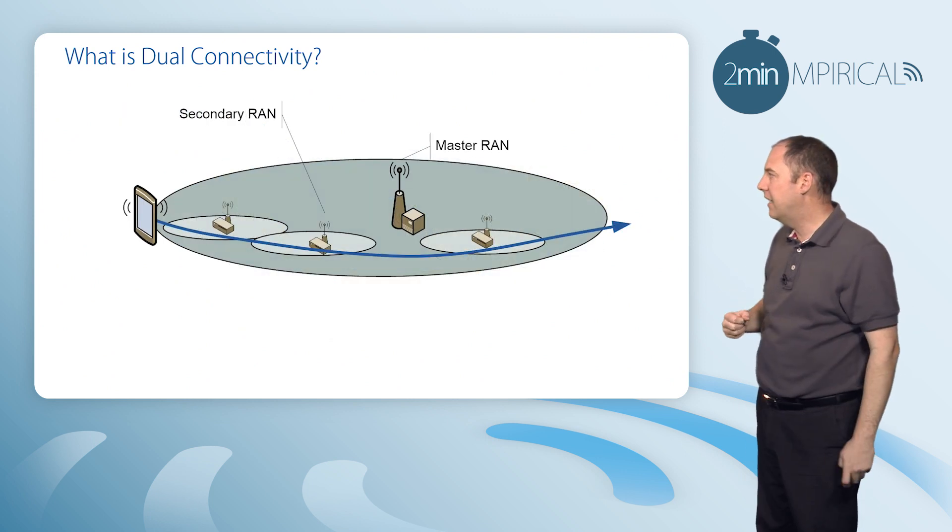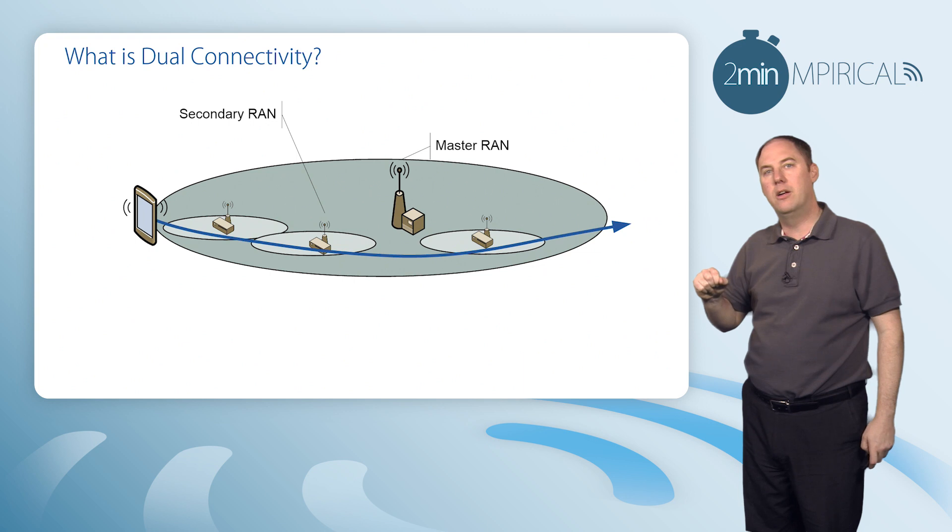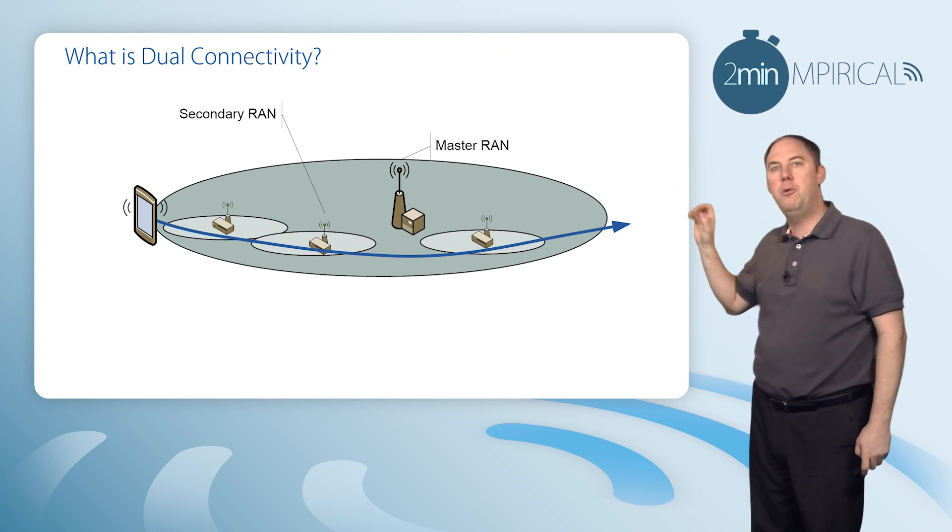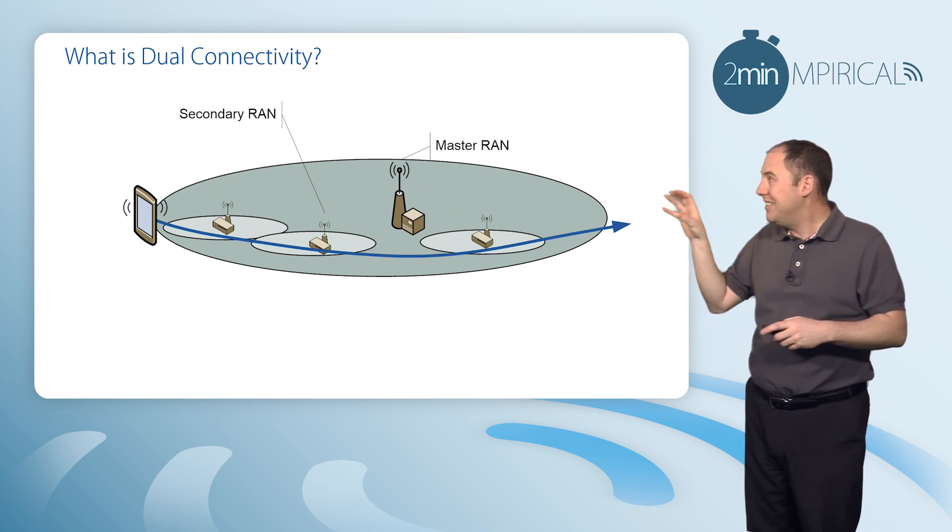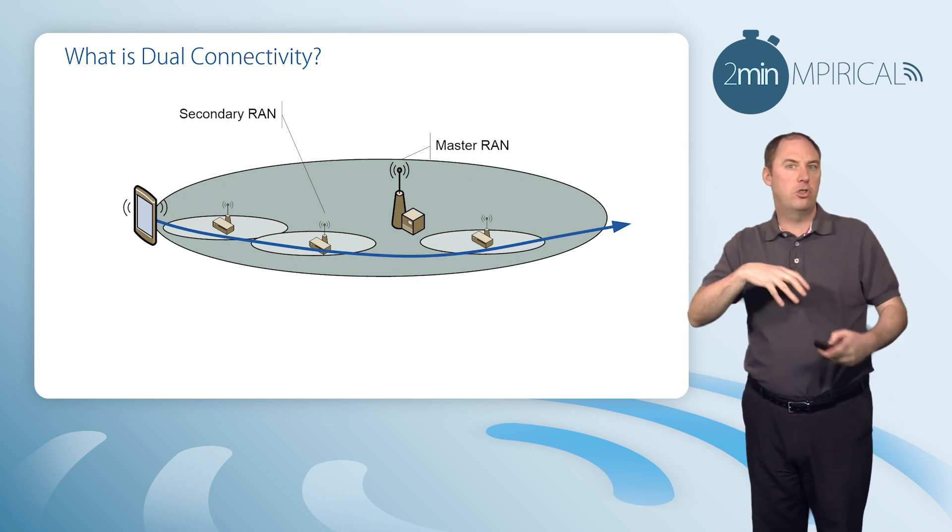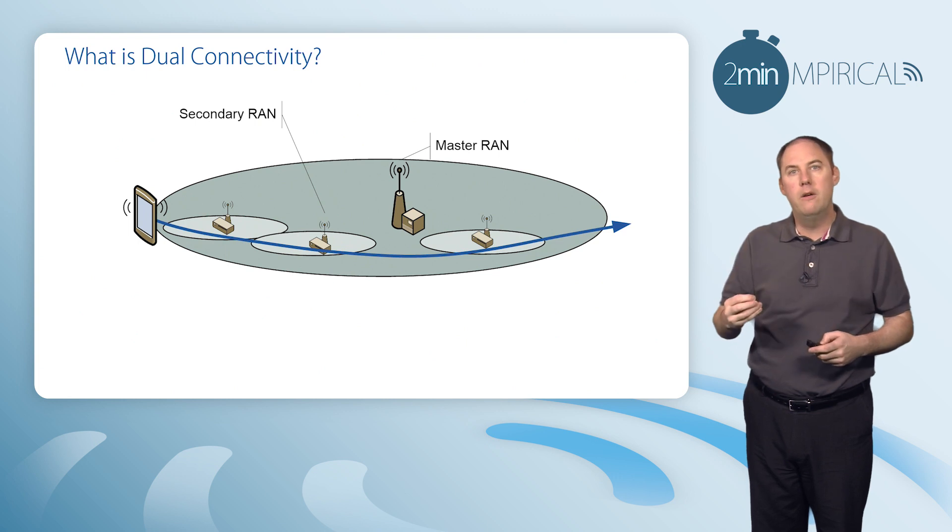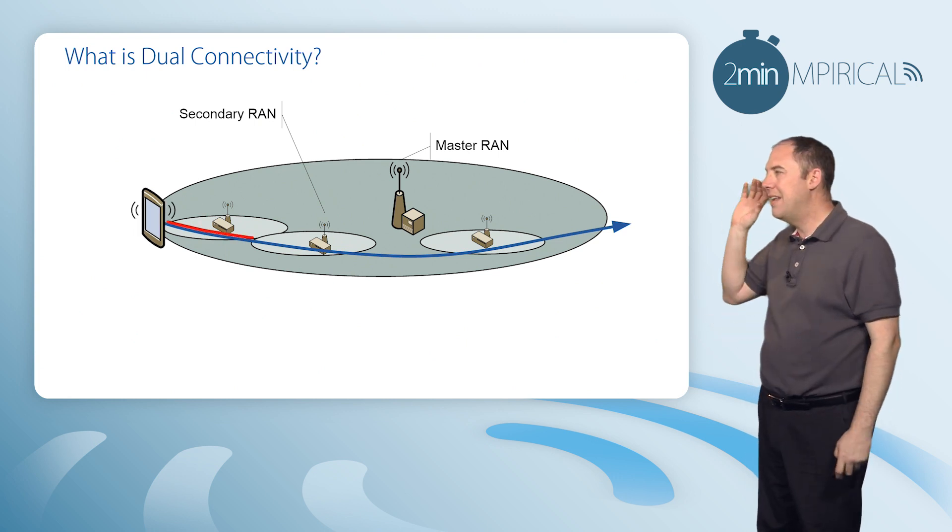Now putting this into more practical scenarios, as a mobile is going through a macrocell, for example, the master RAN node, it can see these small cells, but rather than just switching to them, we're going to jump into dual connectivity.